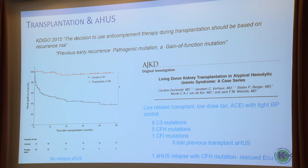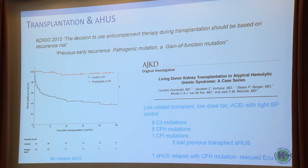Regarding transplantation: in 2015 we said the decision to use anti-complement therapy during transplantation should be based on recurrence risk — early recurrence or pathogenic mutation in C3, Factor B, gain-of-function. If you do that, you don't get HUS. But Nicole and Jack disregarded that and did a paper where instead of eculizumab, they used live-related transplants, low-dose TAC, ACE, tight BP control, with patients carrying C3 variants, Factor H, one Factor I, and five who had lost previous transplants to HUS — and on this protocol they didn't lose anybody, with one relapse rescued with eculizumab.